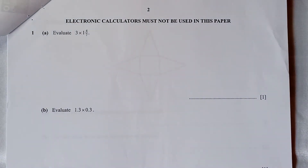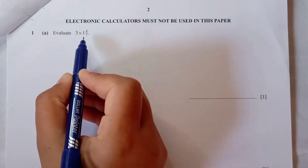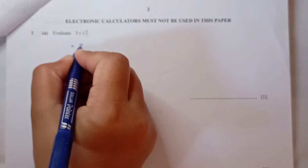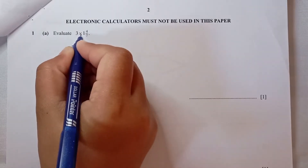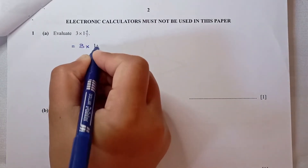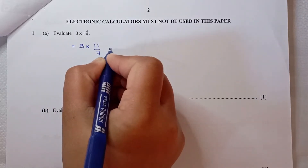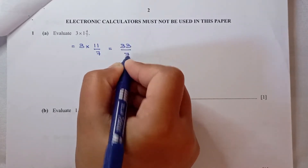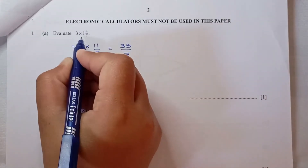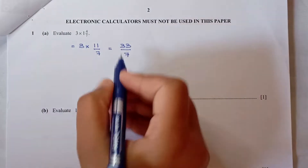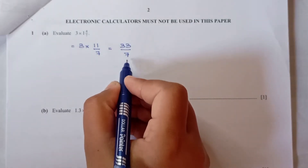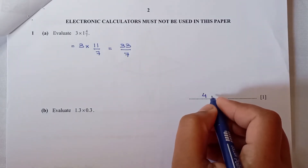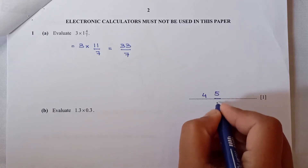In question 1, part A, we need to evaluate this expression. First we need to convert the mixed number into an improper fraction. So 7 times 1 is 7 plus 4 is 11, giving 11 over 7, and 3 times 11 is 33 over 7. Since the question is in terms of mixed number, keep the answer as a mixed number. We know that 7 times 4 is 28 and 28 plus 5 is 33 out of 7.